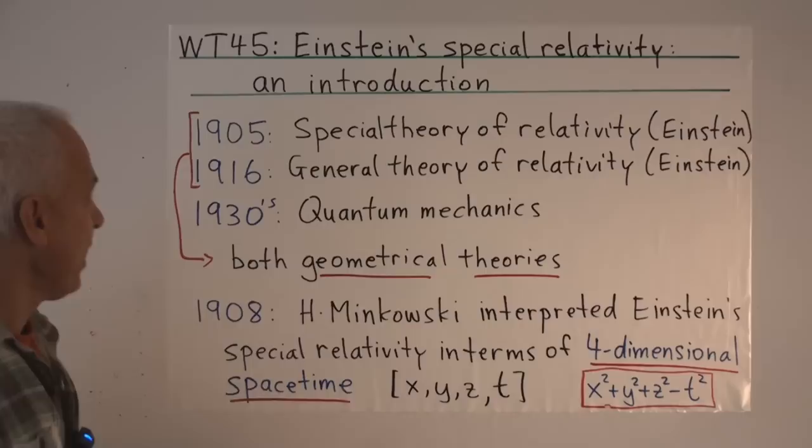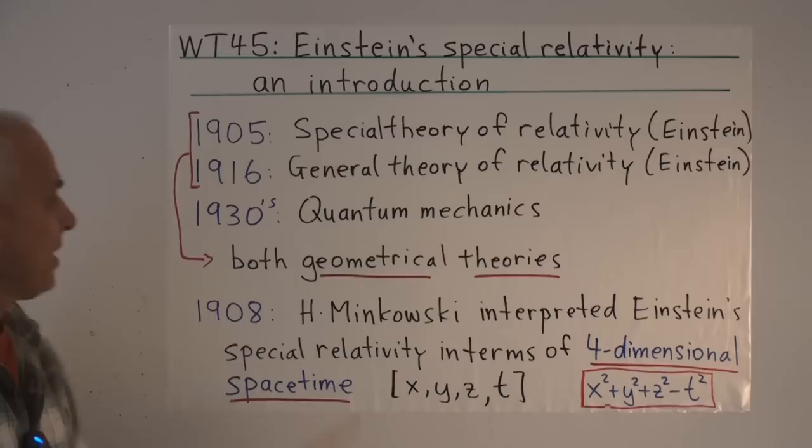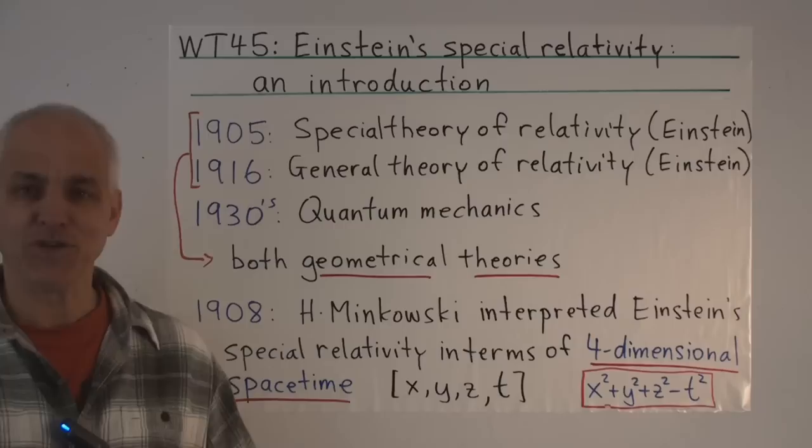In the 20th century, modern physics had really three great revolutions, associated all of them with the name of Einstein. In 1905, Einstein's special theory of relativity. In 1916, the general theory of relativity, which dealt with gravitation. And in the 1930s, and previously also, the development of quantum mechanics.